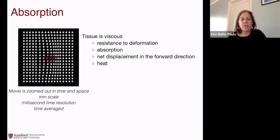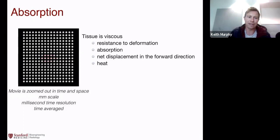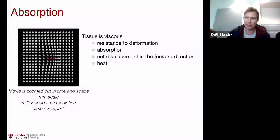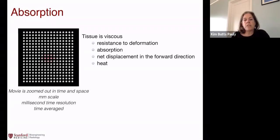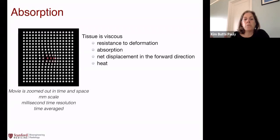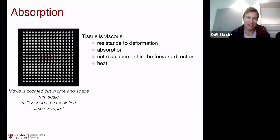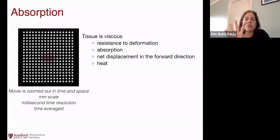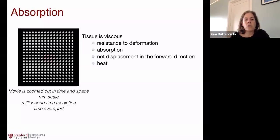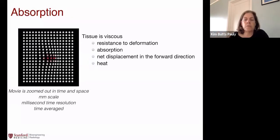Here we're showing just one wave or one cycle, but if we had many cycles, that net displacement would hold throughout the entire cycling. What's been done is zoom out in time and space — so instead of looking on the micron scale, we're looking on the millimeter scale. The focal spot is maybe three millimeters by one millimeter. Also zoomed out in time — we're not seeing the individual pressure waves, but rather: apply the ultrasound for two seconds, then turn it off, then see the relaxation. What we're depicting is the average displacement.